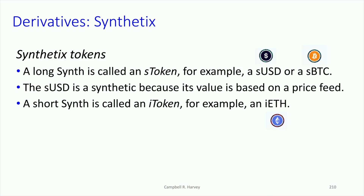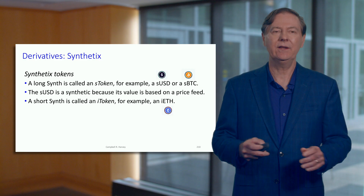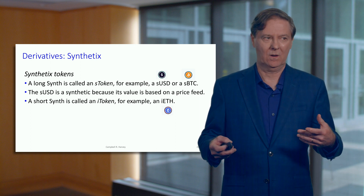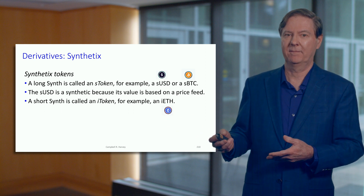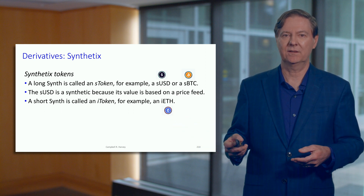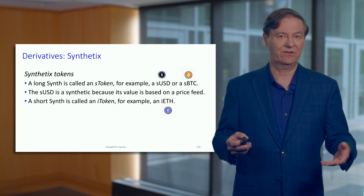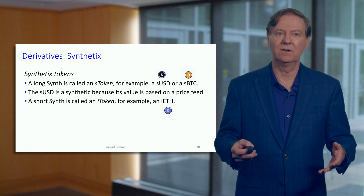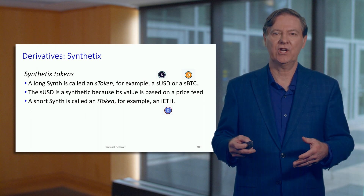So you've got these tokens: a long position is called an S token and a short position is called an I token — so iOil or iETH. All of these are synthetic because they depend upon a price feed. You might think, why stop at the assets already discussed? There are so many other things you could tokenize based on a price feed you decide upon, as long as you have a reliable Oracle. They use the Chainlink Oracle for this.